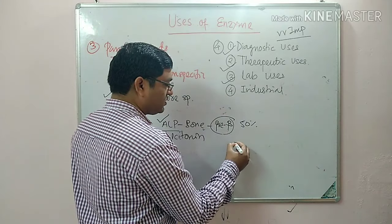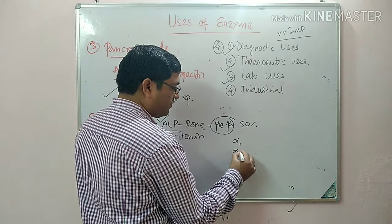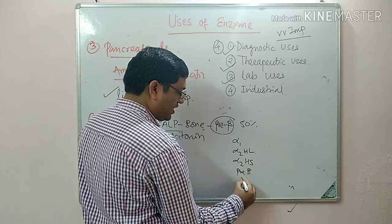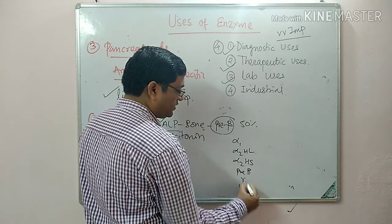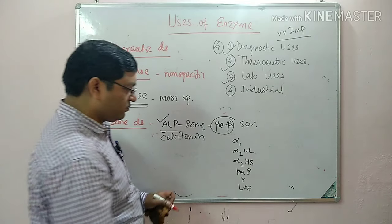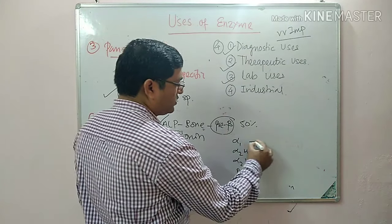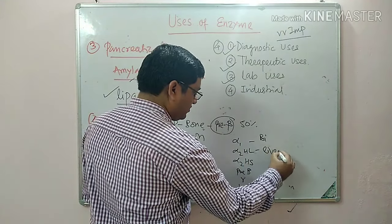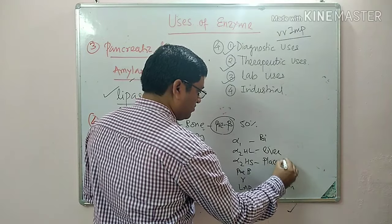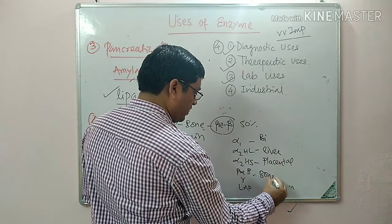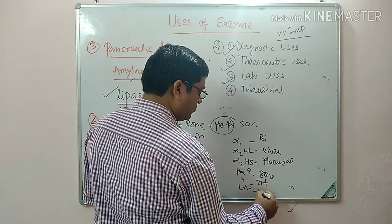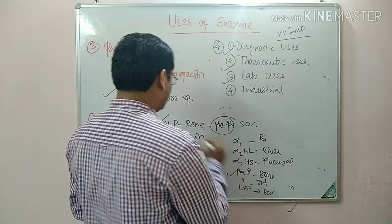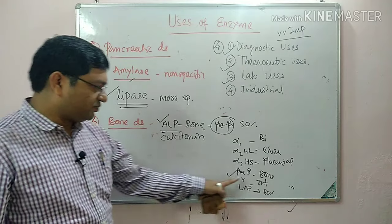The six isoenzymes of alkaline phosphatase are: alpha-1, alpha-2 heat-labile, alpha-2 heat-stable, pre-beta, gamma, and leukocyte alkaline phosphatase. Alpha-1 is indicative of biliary pathology, heat-labile is from the liver, heat-stable is from the placenta, pre-beta is from bone, gamma is from the intestine, and the leukocyte isoenzyme is from white cells.